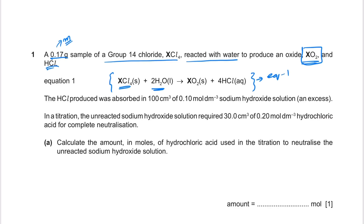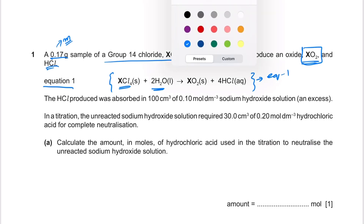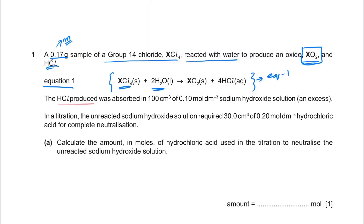The next thing they tell us is that the HCl produced in equation 1 was absorbed in 100 cm³ of 0.1 mol/dm³ sodium hydroxide. So the HCl produced in reaction 1 was reacted with sodium hydroxide. This sodium hydroxide is in excess, meaning it will remain at the end of the reaction. We can call this reaction number 2.